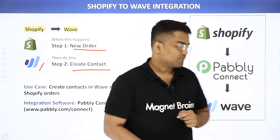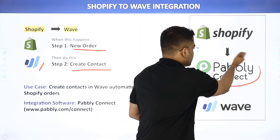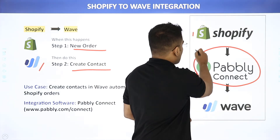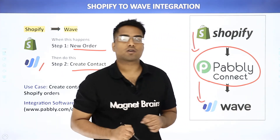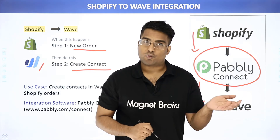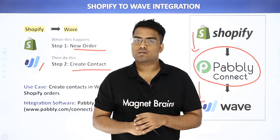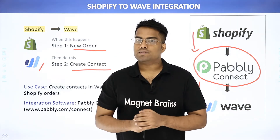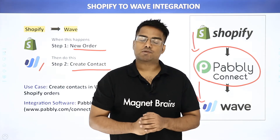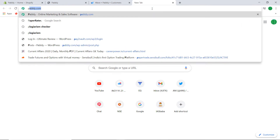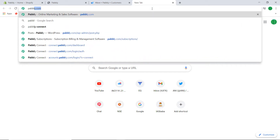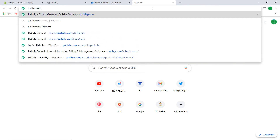In this video we will use Pabbly Connect to integrate Shopify and Wave. The best part of using Pabbly Connect is there is no need for coding skills or any programming language — it can be done in two easy steps. To begin the process, type pabbly.com in your browser and press enter.